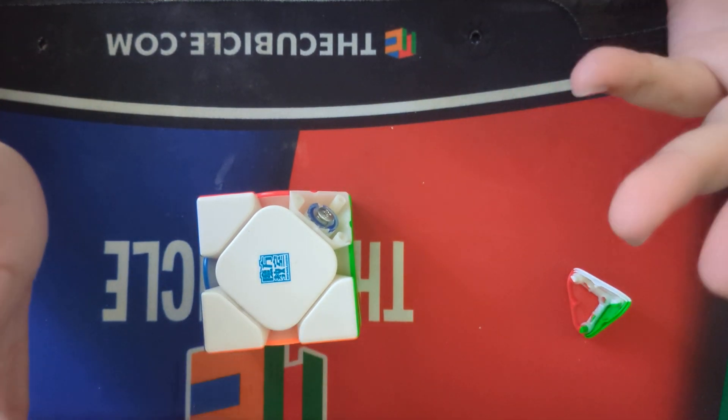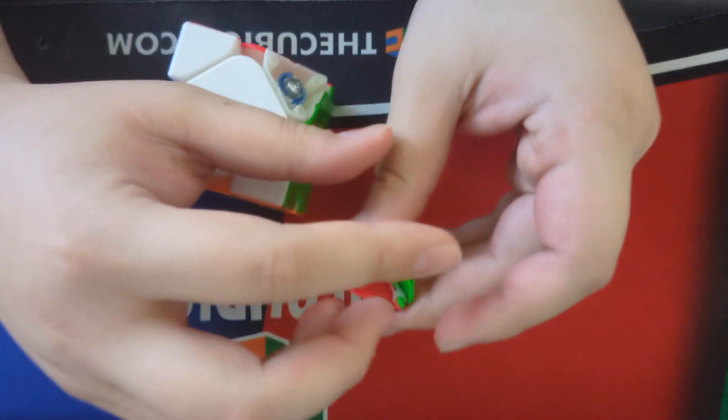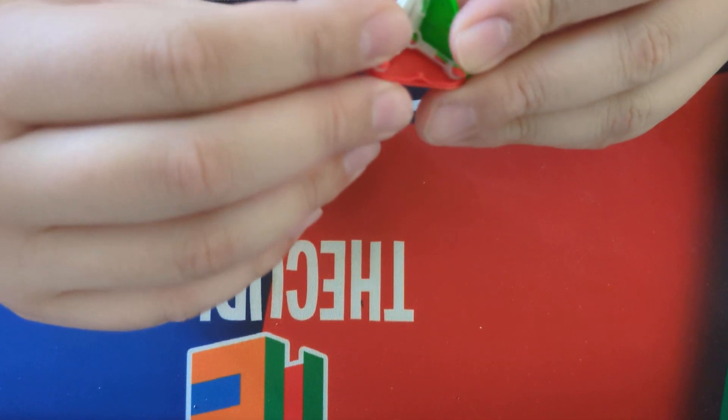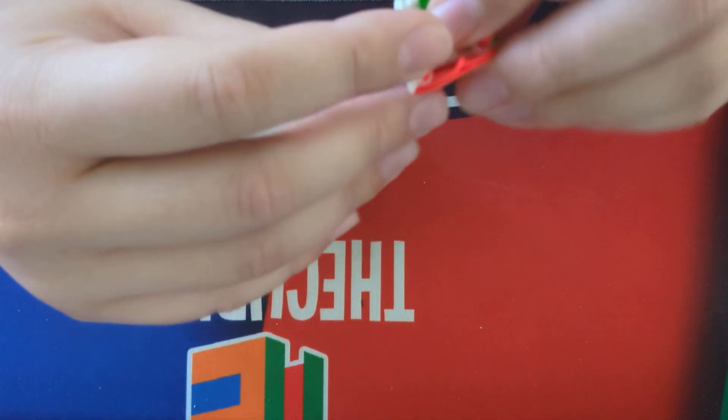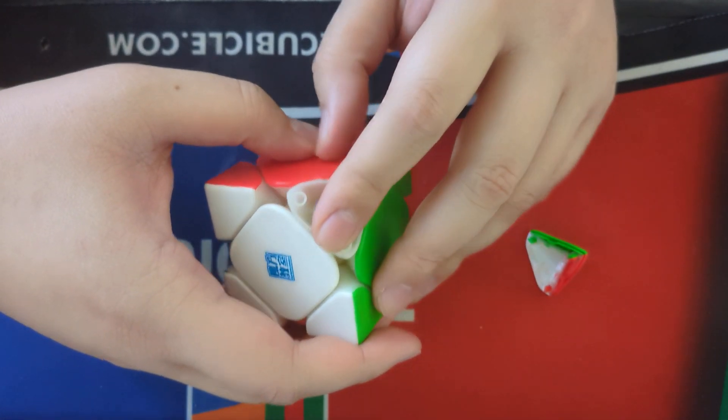Now the only way that we can go ahead and resolve this is by introducing more material either in the slots or on the pegs themselves. Now I like avoiding the pegs themselves because what if you need to split this in the future or whatever. So we're going to focus in on these slots right here.